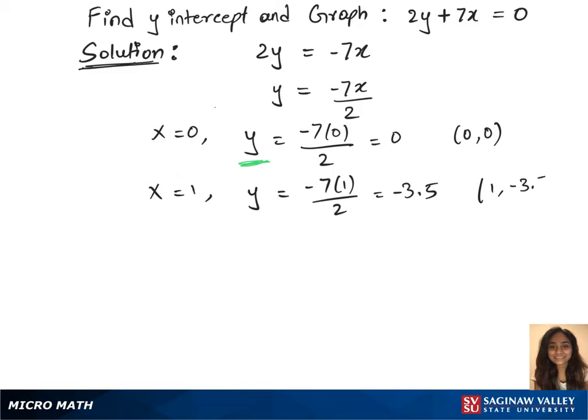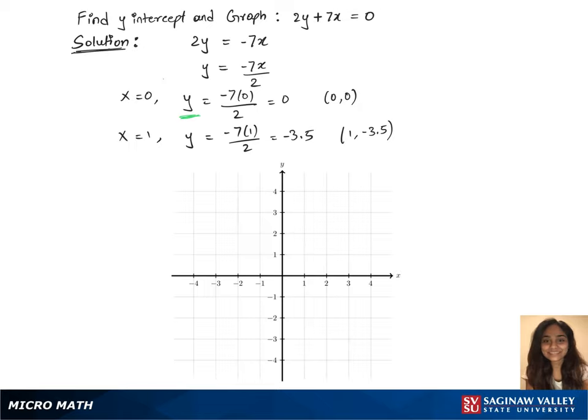We have two points; we can plot this on the graph now. 0 and 0 lies there, 1 comma minus 3.5 is down here, so let's mark it.